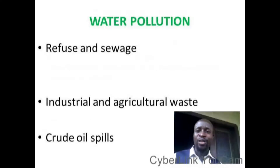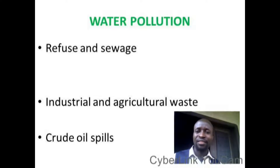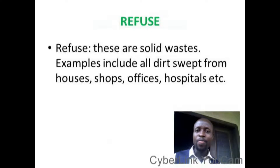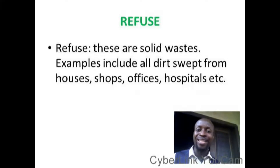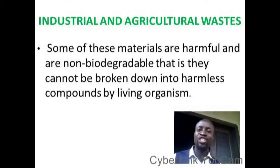The pollutants in water are: number one, refuse and sewage; industrial and agricultural waste; and crude oil spills. Refuse are solid waste materials — examples include dead waste from houses, offices and hospitals, banana peel, orange peel, and pineapple peel. Sewage is liquid waste — examples include human faeces, and soapy water after bathing.